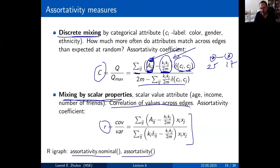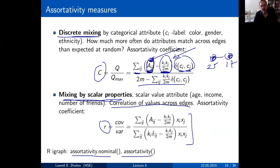For example, if the label means race in a society, strong assortativity means there is racial segregation — people of one color are only friends with people of the same color. If not, you have a very mixed society. This is also a way to understand the structure of the network by looking at these numbers.